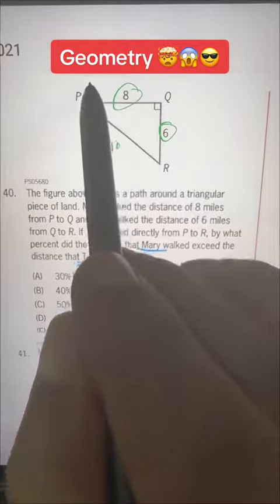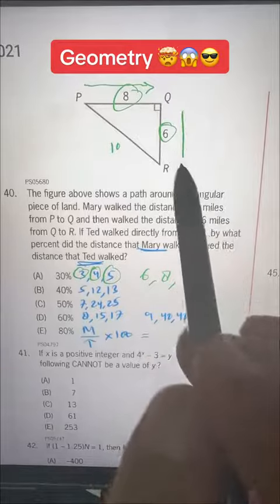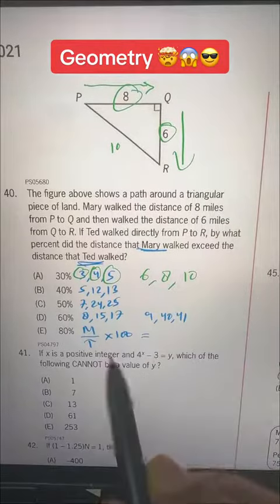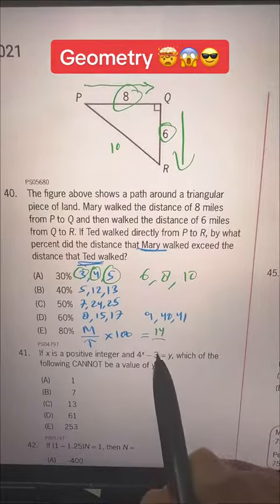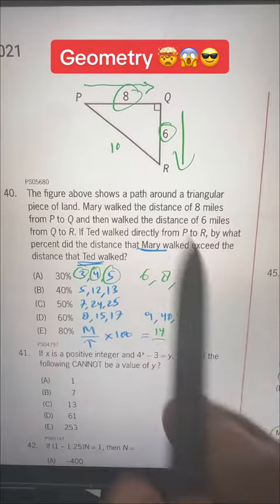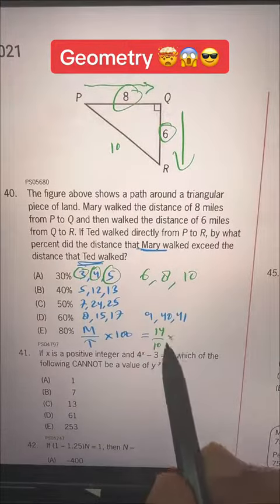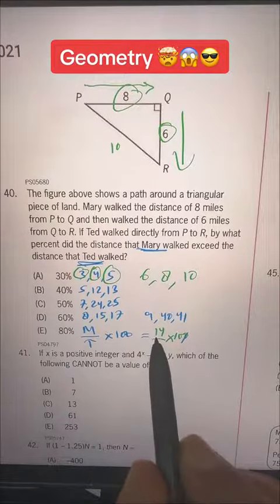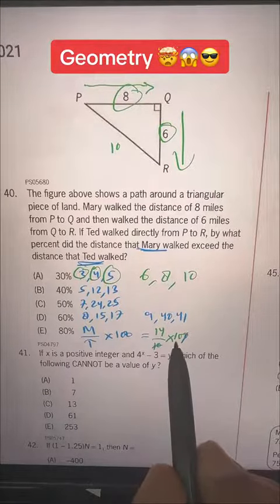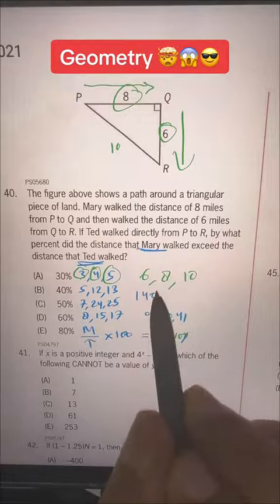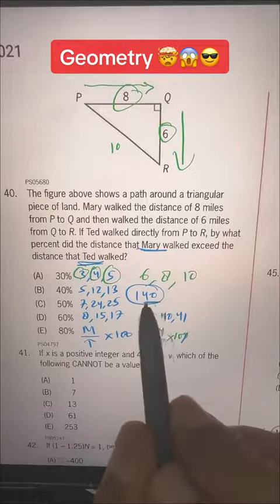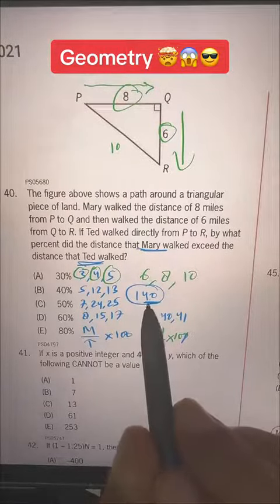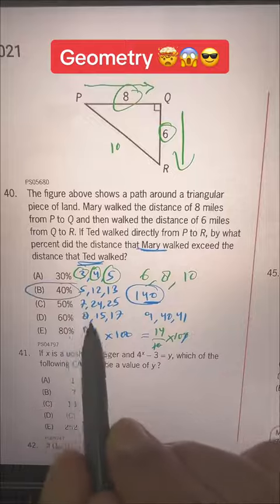Now, the distance walked by Mary is 8 plus 6, that is 14, divided by 10 times 100. Cancel this 0 with this 0 and 14 times 10 is 140, and 140 is how much greater than 100? It's 40, so 40% more is our answer, choice B.